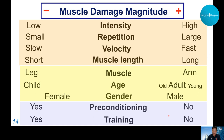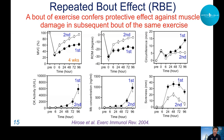This is called the repeated bout effect: a bout of exercise confers a protective effect against muscle damage in a subsequent bout of the same exercise. For elbow flexor eccentric exercise, the first bout caused large strength decreases with very slow recovery. But four weeks later, without any training, repeating the same exercise showed much quicker recovery of strength, range of motion, less swelling, no increase in CK and myoglobin, and less soreness.